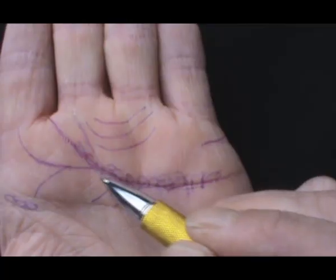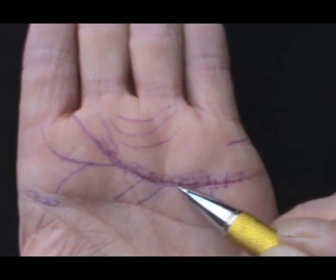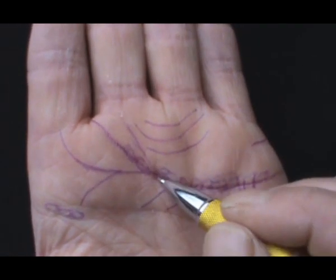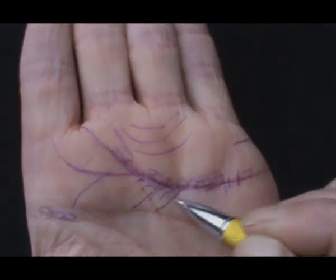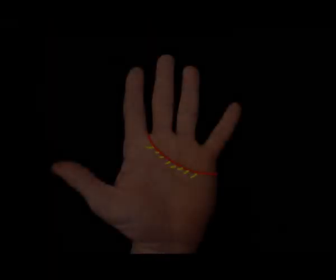Heart lines can get stronger and clearer over time with changes and improvements. Many fine lines falling from the heart line can show a flirty nature.